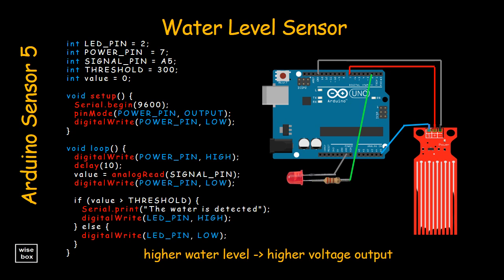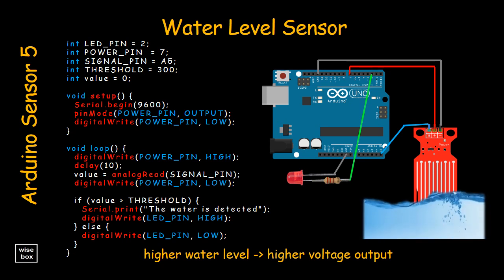Thus, by measuring the output voltage, we can determine the water level. In this project, when the water level goes beyond a certain threshold, it triggers the LED to light up.